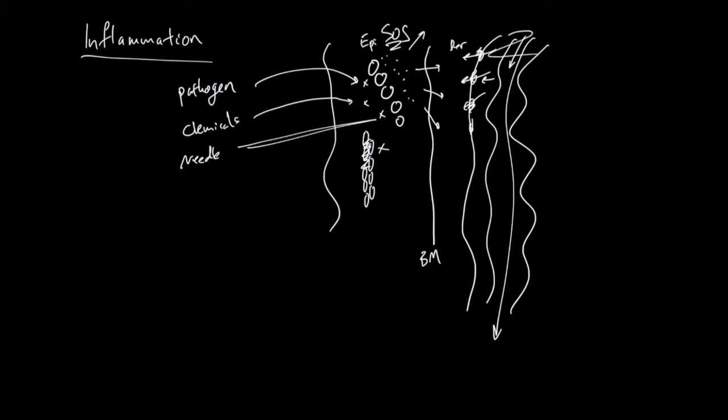So with this leaky blood vessel and lots of SOS chemical signals, a lot of things will get to this region. And there are three types of things. One, platelets. Two, plasma proteins. And three, immune cells.